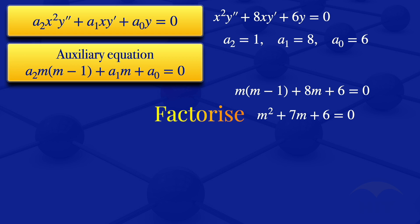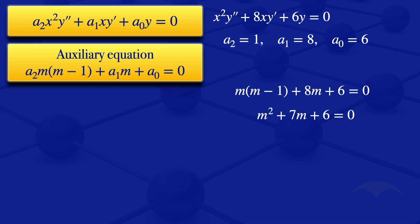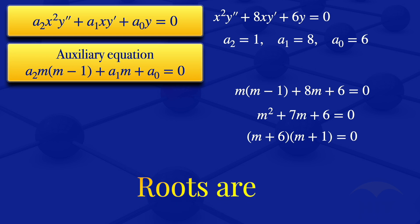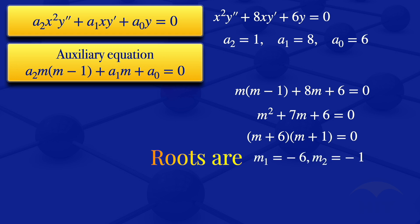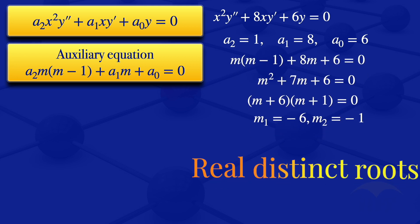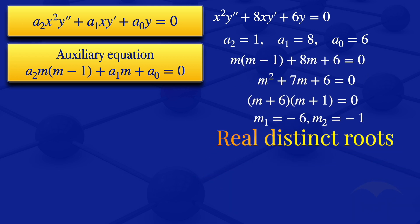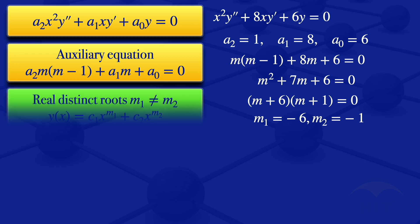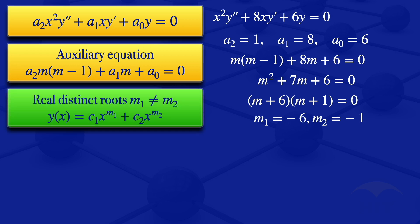We factorize m squared plus 7m plus 6 by looking for numbers that multiply to 6 and add to 7, which are 6 and 1. So we have (m plus 6)(m plus 1) equals 0, giving roots m1 equals minus 6 and m2 equals minus 1. These are real distinct roots. When the auxiliary equation has real distinct roots m1 not equal to m2, the general solution is c1 times x to the power m1 plus c2 times x to the power m2.